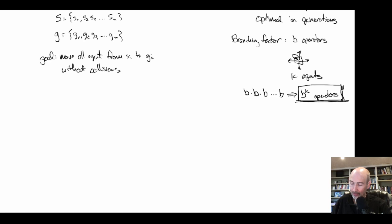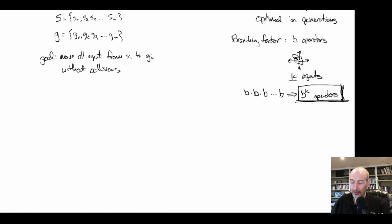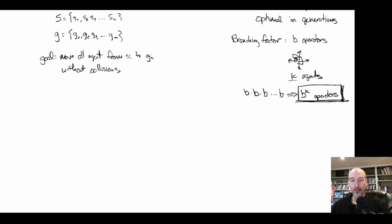The branching factor in the joint space is b^k, and then with solution depth on top of that, this grows as (b^k)^d. Even if the state space is polynomial, the search space still grows very large very quickly. Generally speaking, this problem is too large to just apply A* by generating all operators in the joint space.